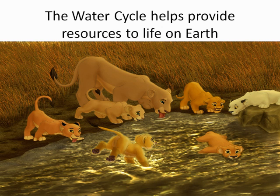Evaporation, condensation, and precipitation are all stages in the water cycle that are a natural reoccurring event that helps provide resources to life on earth. Without it, the crops would not produce food, plants would not survive, and all other living creatures would suffer without water. With the sun providing heat, the cycle can become complete as each state helps the next one. The water cycle is a crucial part of how water is recycled, which helps the earth function properly.